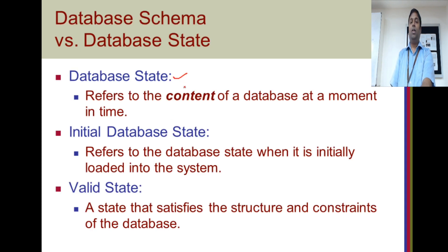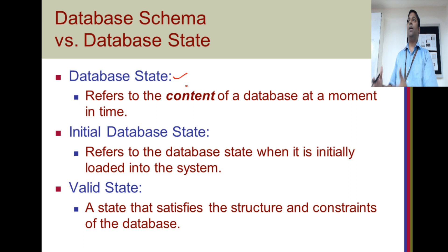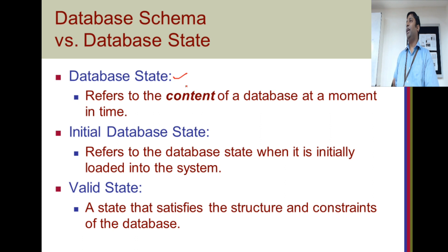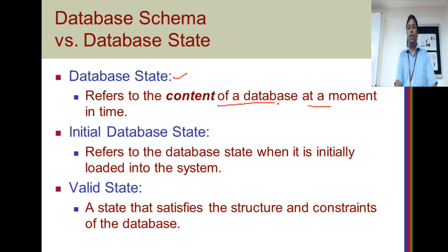What is the database state? It refers to the data at a particular moment inside the database. If you take a snapshot of a student management system at this moment, we will have the data of the students with the attendance status and mark status. After CAT1, if you take a snapshot of VTOP, the data might have changed because you would have uploaded your marks and attendance. So, database state refers to the content of a database at a moment in time — it is a snapshot of the database.